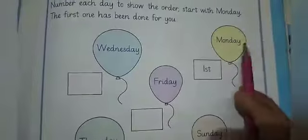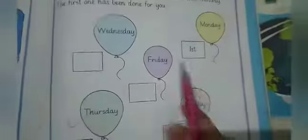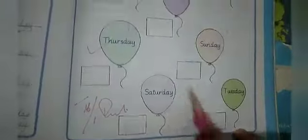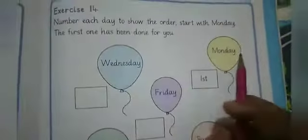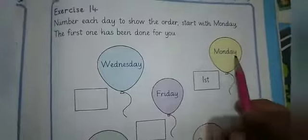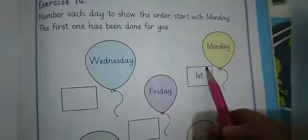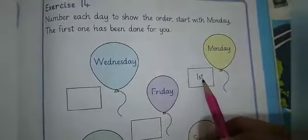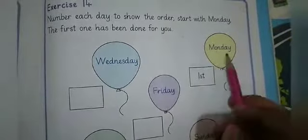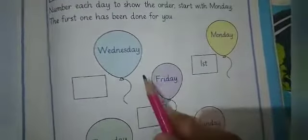The days written in the exercise are: Monday, Friday, Wednesday, Thursday, Sunday, Tuesday, Saturday. We need to arrange them in the correct order and sequence. As we know, Monday is the first day of the week.